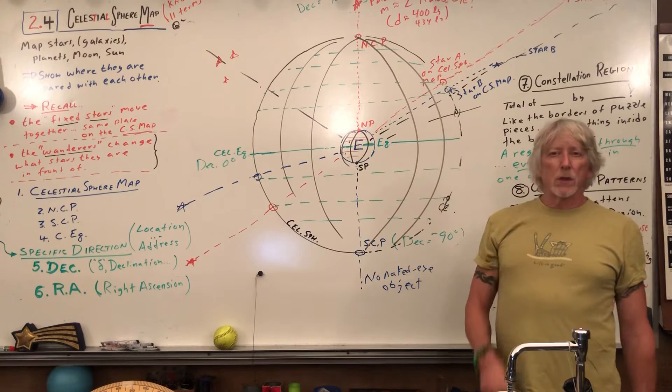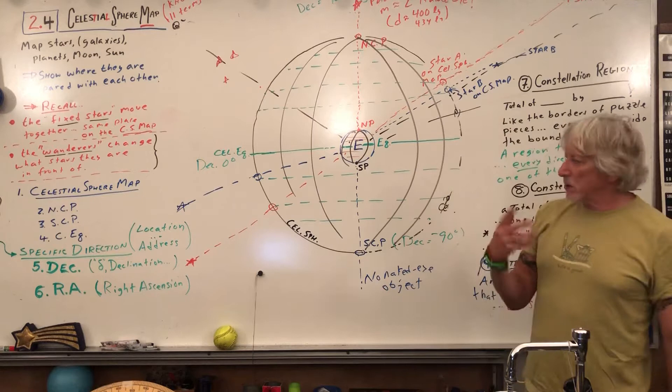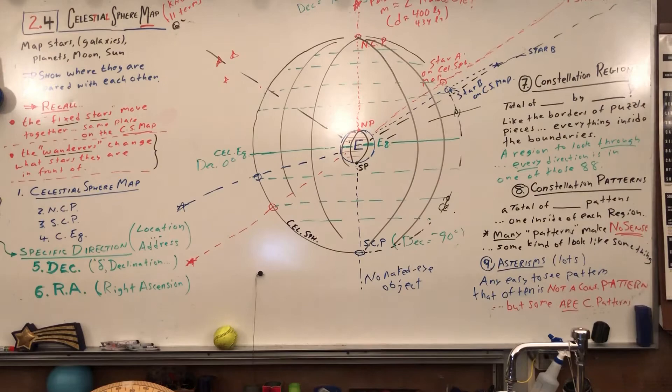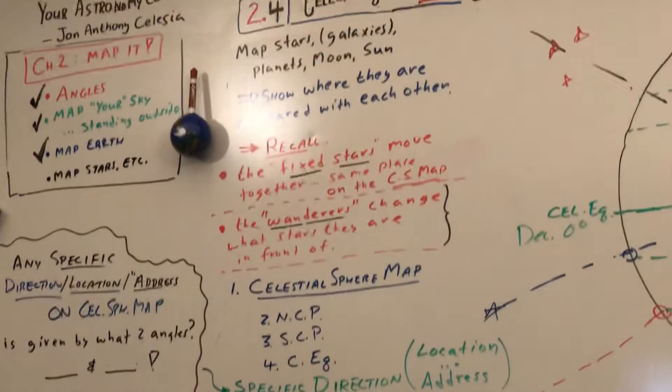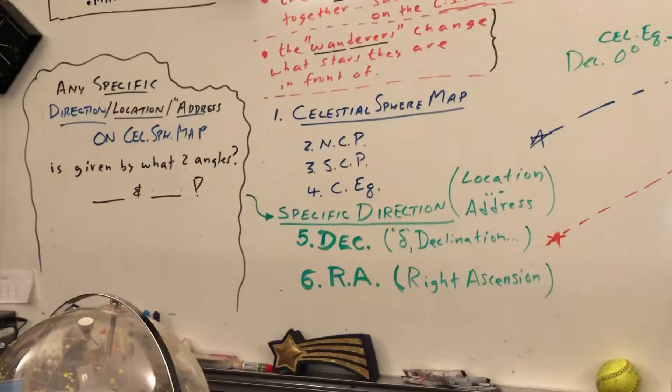How many terms do we have total for this celestial sphere? That's one term. Okay, plus one. Eleven, right? Eleven terms that you should know. So when you try to memorize, it's good to lay out with the patterns. What have we done real quick? Right, so we've gone over this map.